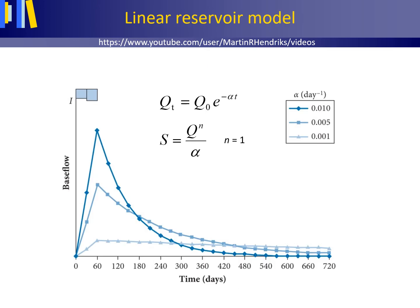This figure shows the effect that using different values of the recession constant alpha has on the baseflow hydrograph modeled with the rainfall runoff simulation model. As expected, a low value of alpha causes the baseflow to react slowly, which is noticeable both in the rising limb and falling limb of the hydrograph.